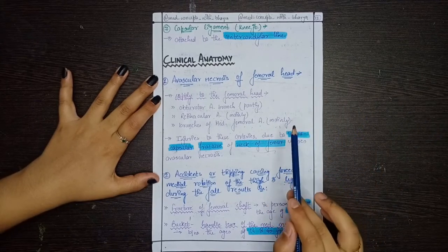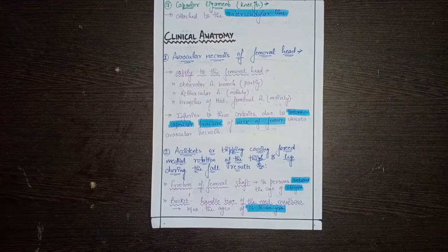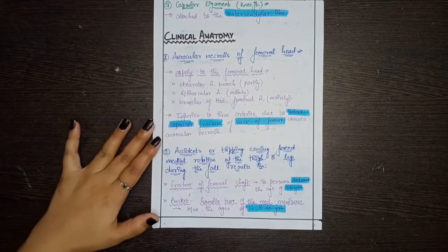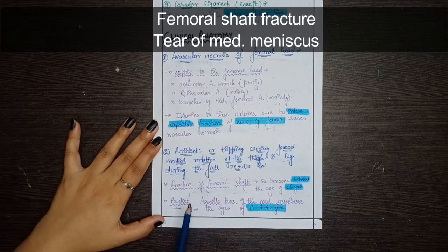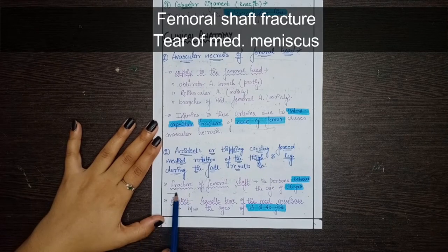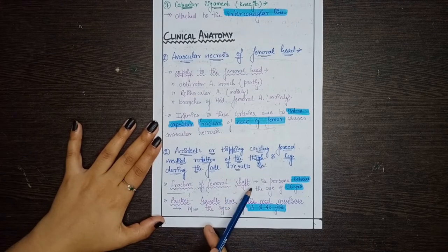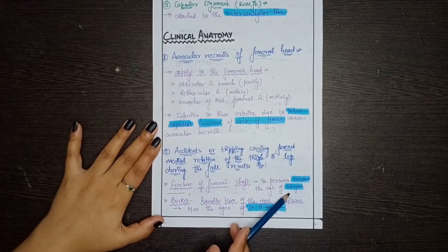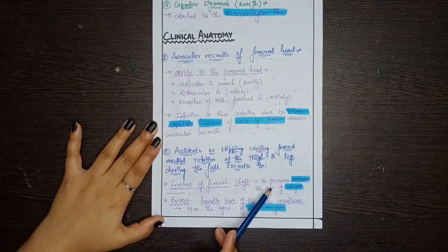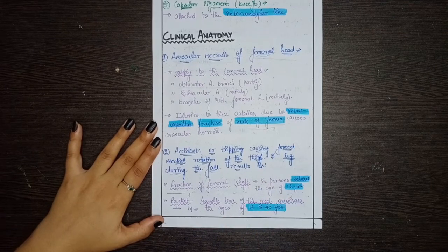The second clinical condition includes two parts: fracture of the femoral shaft and bucket handle tear of the medial meniscus. Fracture of the femoral shaft usually occurs in people below the age of 16 years — that is, in kids.